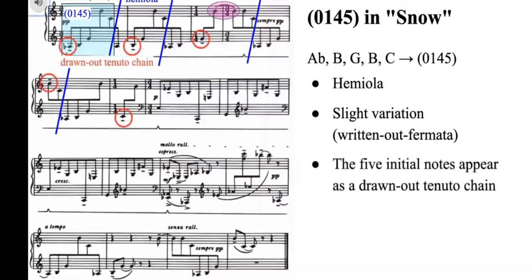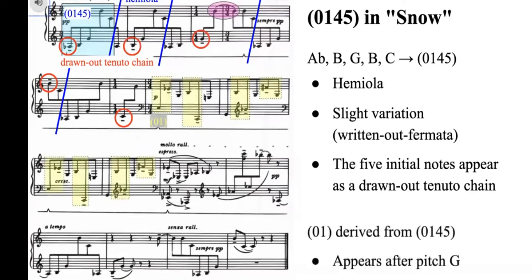Moreover, the five initial notes, which is circled on the score, appear as a drawn-out tenuto chain which spans over six measures, then the 0145 was scattered, appearing in the later as a subset 01. Please be noted that the occurrence of a 01 dyad is always after the pitch G.